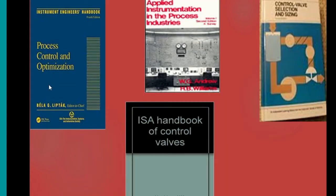Process Control and Optimization by Béla Lipták covers the entire syllabus from head to toe — highly recommended because this book will also be needed in your final year, and many topics from final-year subjects are covered in it. Andrew Williams is most recommended for control valves and will again be used in your final year. The ISA Handbook on Control Valve Selection and Sizing is also available. All these books are available in the library — please do refer to them.